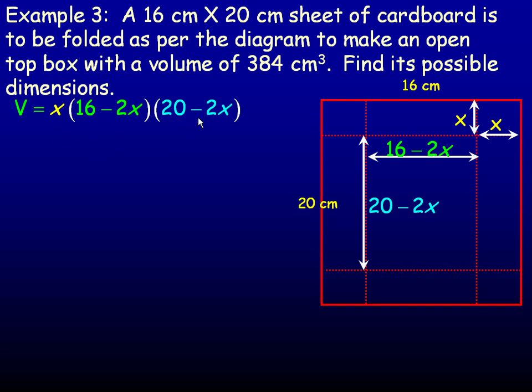Now we're going to multiply these together, expand out this product. And so multiplying the x into the 16 minus 2x, we'll get 16x minus 2x squared, and now we're going to multiply that by the 20 minus 2x.